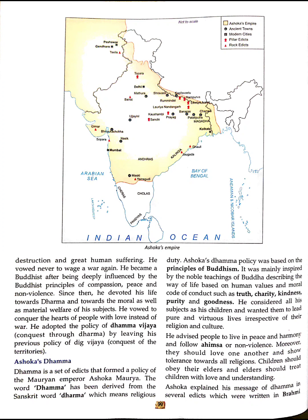He felt deep remorse at the death of so many people and the great human suffering. He vowed never to wage war again. He became a Buddhist after being deeply influenced by the Buddhist principles of compassion, peace, and non-violence. He adopted the policy of Dhamma Vijaya — conquest through Dharma — leaving his previous policy of Dig Vijaya, conquest of territory.